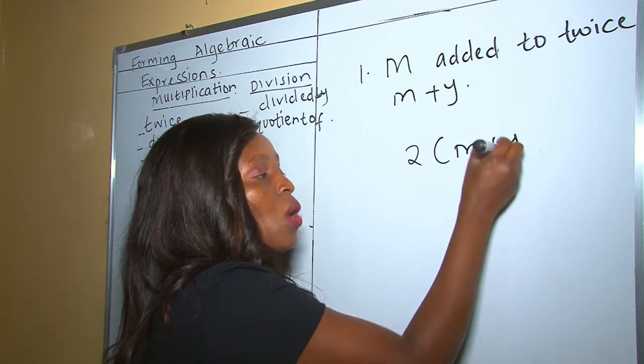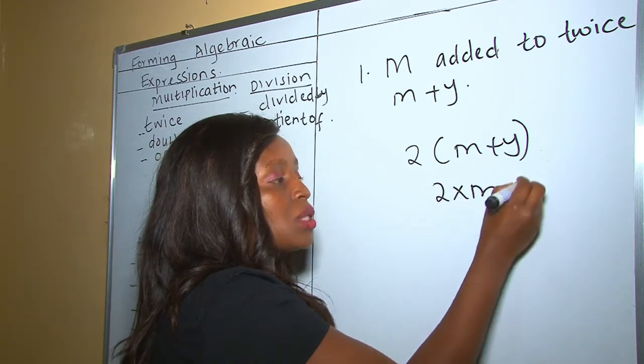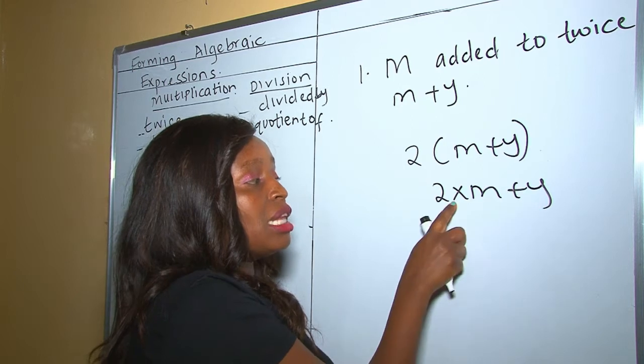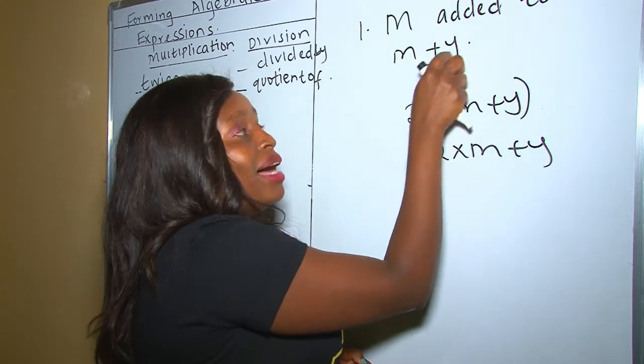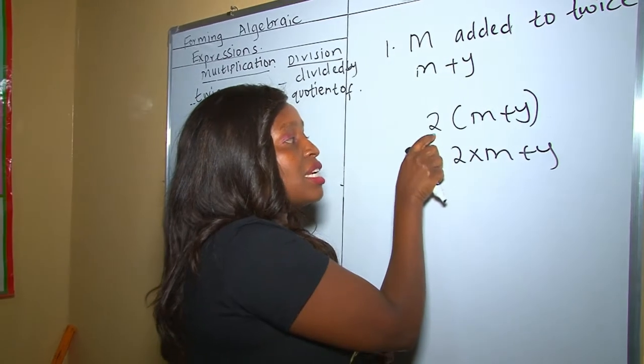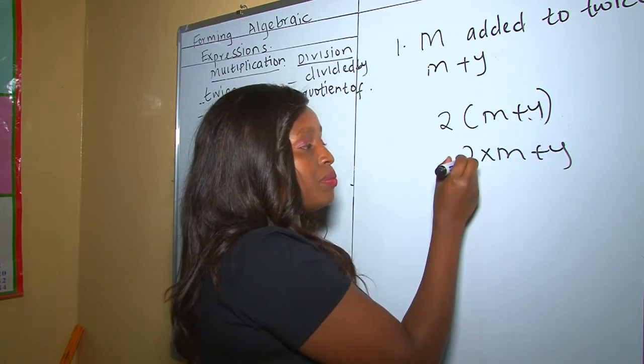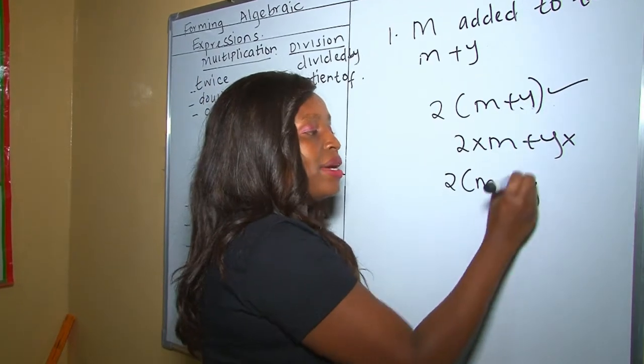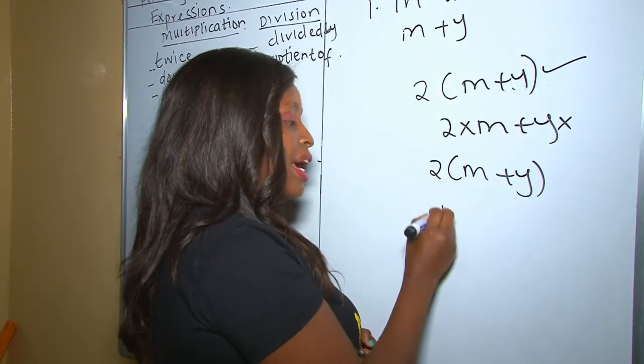Somebody can ask, why can't I do 2 multiplied by m plus y? If you know BODMAS, this is a different meaning. In BODMAS, this means the multiplication is only between 2 and m. But remember, we are doubling m plus y together. That's why I'm putting brackets to show that this 2 is going to multiply everything, that is m and y. Therefore, this is not our correct concept. This is the correct concept. So 2(m plus y), we have already done twice m plus y. Now we add m, so m plus 2(m plus y), and this is our answer.